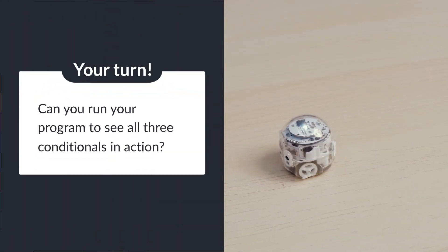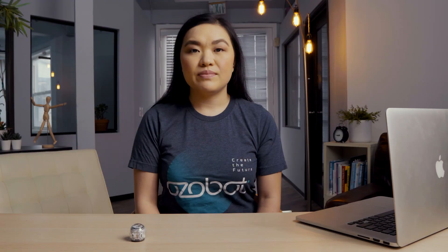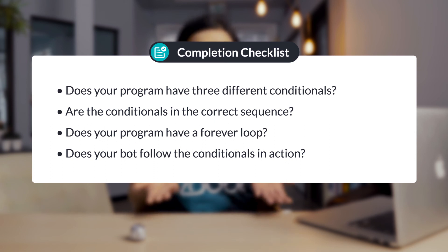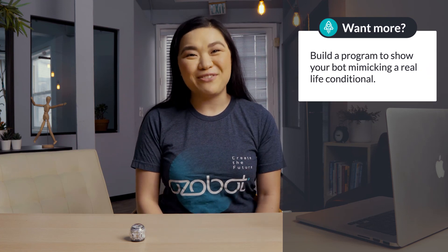Can you run your program to see all three conditionals in action? Check your work: Does your program have three different conditionals? Are the conditionals in the correct sequence? Does your program have a forever loop? Does your bot follow the conditionals in action? If you're looking for more to do, you can use the sensor blocks to program your own three conditionals, write statements to show three to five conditional statements in real life, or build a program to show your bot mimicking a real-life conditional.